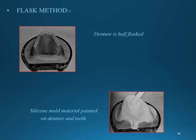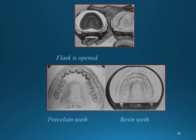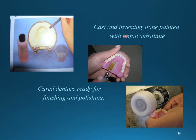In the flask method (laboratory method), the denture is half-flasked and silicone mold material is painted on the denture and teeth. The flask is opened; the denture base is on one member and the impression on the other. Separating medium is painted on the cast and investing stone, the resin is packed, and the denture is cured and ready for finishing and polishing.